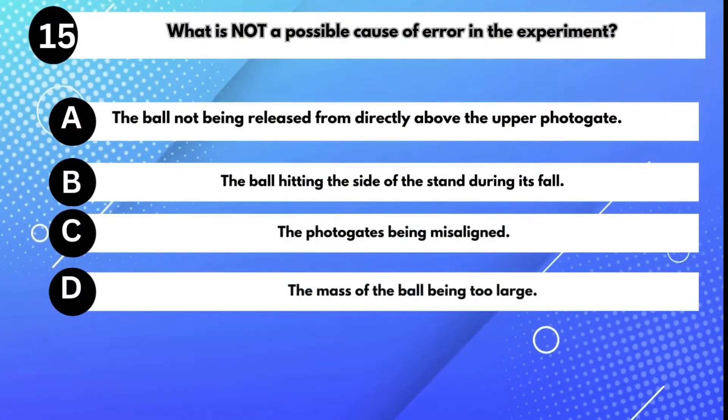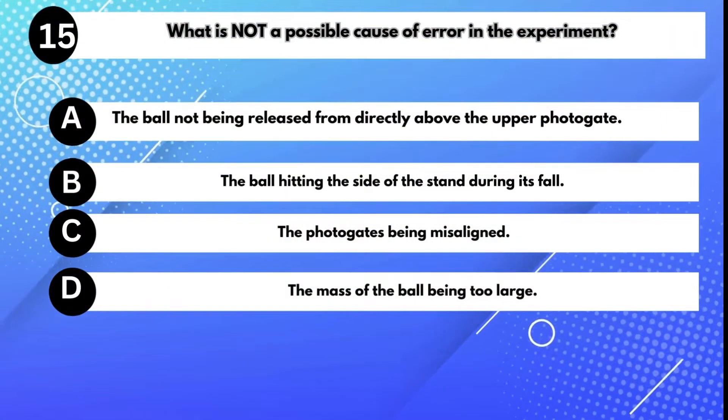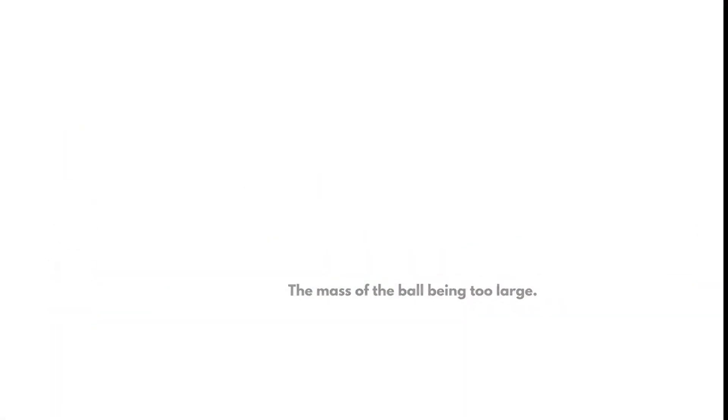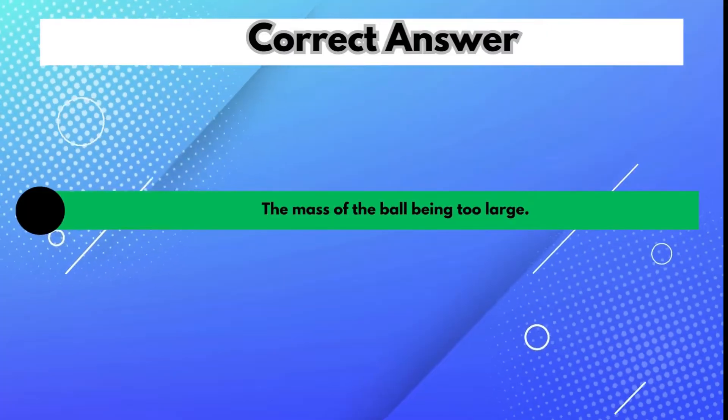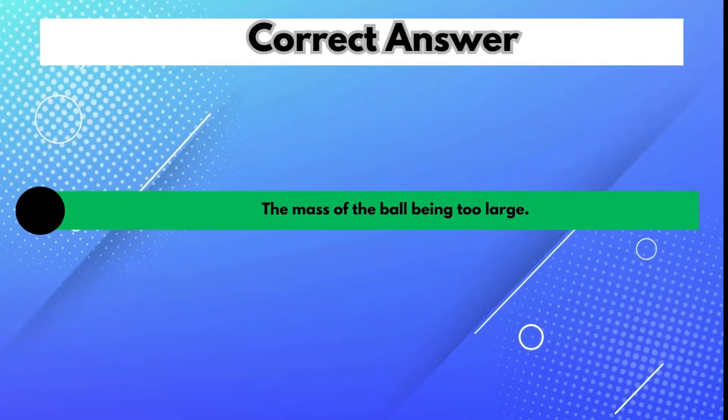What is not a possible cause of error in the experiment? Answer D: The mass of the ball being too large.